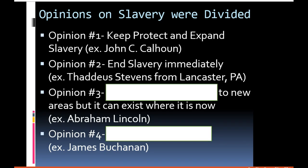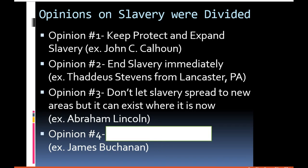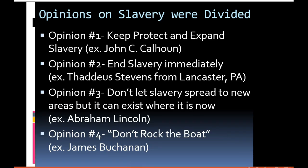Abraham Lincoln, our 16th president, wasn't entirely sure about slavery but basically said: don't let slavery spread into new areas, but it can exist where it already is. He believed slavery would eventually die away if kept contained. James Buchanan, our 15th president and the only president from Pennsylvania, essentially said 'don't rock the boat' — he didn't want to make anybody mad, whether they were pro-slavery or anti-slavery.